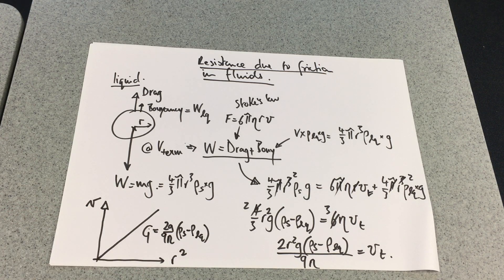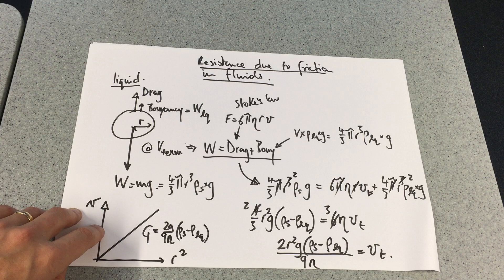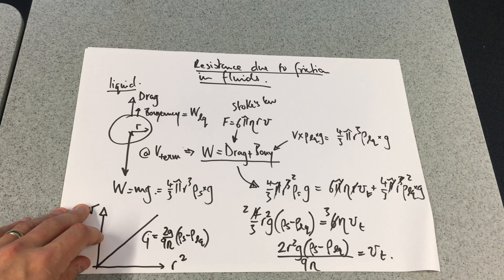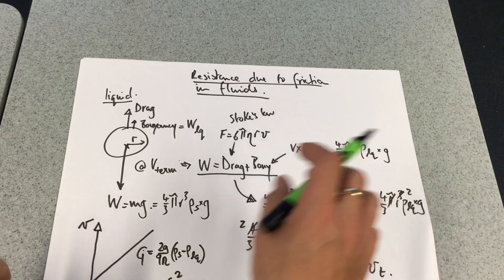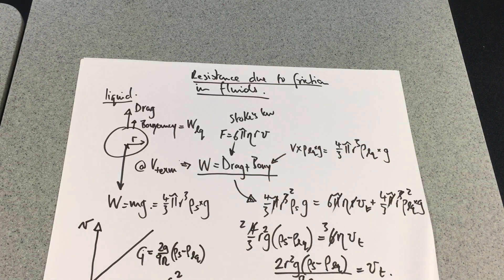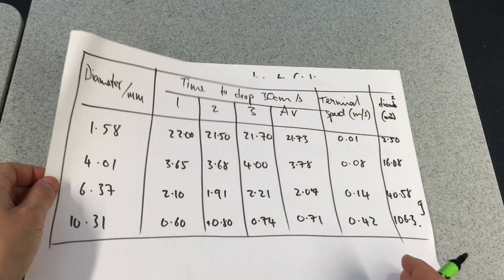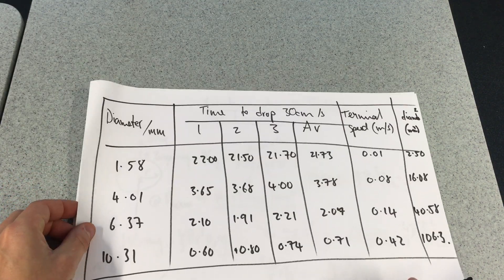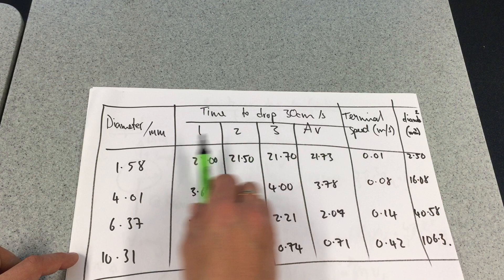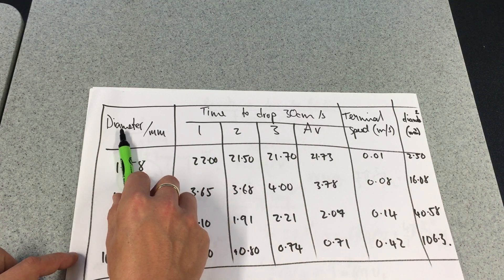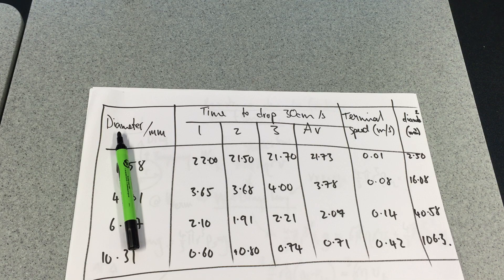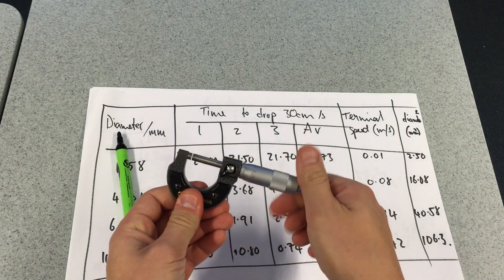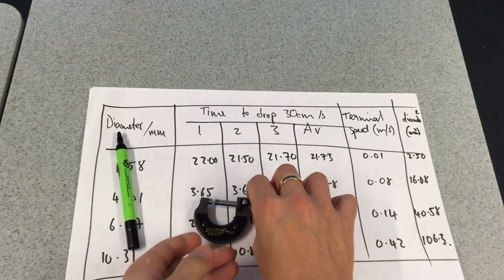We probably want to see the experiment itself. Let me show you the table of results. I've got my independent variable on the left, and I've done the diameter of the ball. When you see the actual size of the balls we're using, we're going to have to use a micrometer to measure them.